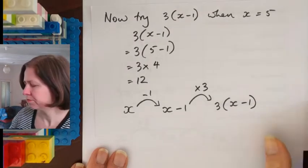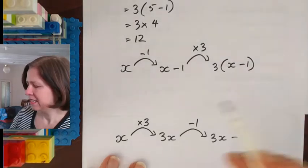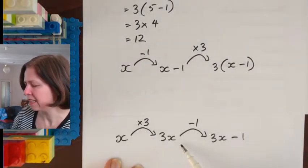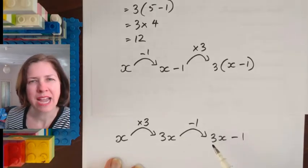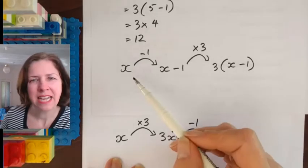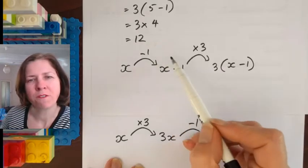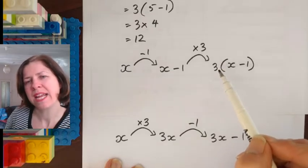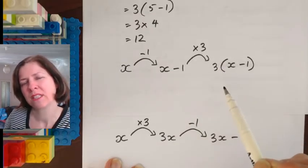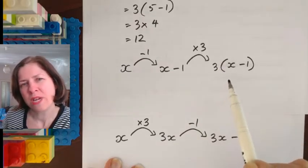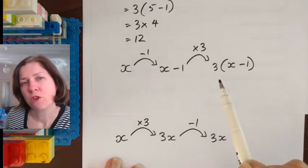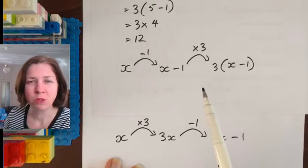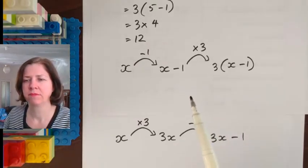So let's compare now. In the first example I multiplied by 3 first to get 3x and then I subtracted 1 to get 3x minus 1. In my second example I subtract 1 first to get x minus 1 and then I multiply by 3 which gives me 3 times x minus 1. So one of the skills we need is drawing the forward flow diagram and what we're going to do in backtracking is go backwards to get the answer.